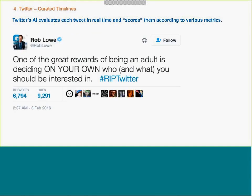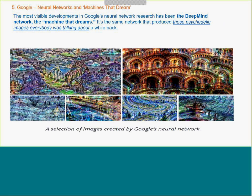Twitter uses machine learning to score each tweet, and they utilize those scores for promoting tweets. Google has come up with a neural network where they developed a machine that actually dreams — all the images created by that neural network are made by machine learning. They have created a machine that actually dreams.